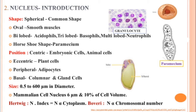If you look at the size, it also varies. You can observe diameters from 0.5 to 600 microns. The mammalian nucleus is about 6 microns and can occupy nearly 10 percent of the cell volume. According to Hertwig, the nucleus size is directly proportional to the amount of cytoplasm in the cell. According to Boveri, the size of the nucleus depends on the amount of chromosomes present inside.